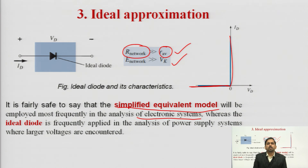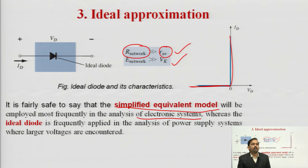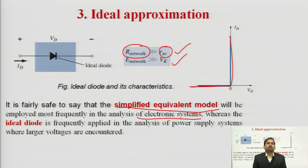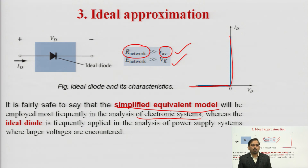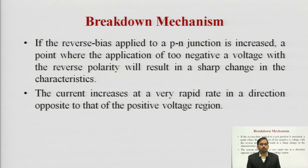The ideal approximation is used in rectifier circuits where we assume the diode is ideal — meaning the cutting voltage is 0 and the average resistance offered by the diode is also 0 — because it reduces complexity while performing calculations.